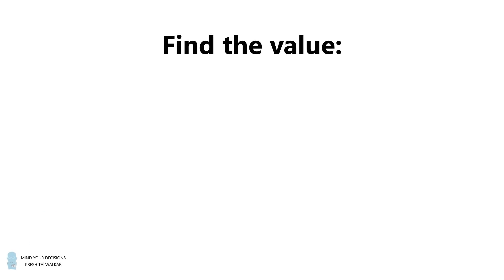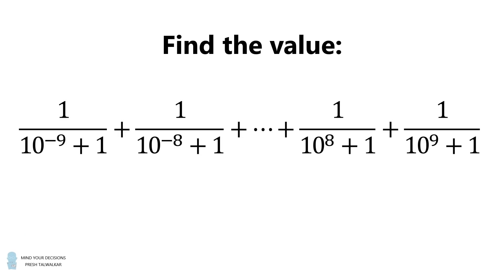Hey, this is Presh Talwalkar. Find the value of the following series. The first term is 1 divided by the quantity 10 to the power of negative 9 plus 1. The second term is 1 divided by the quantity 10 to the negative 8 plus 1. And this continues until the last two terms of 1 divided by 10 to the power of 8 plus 1, plus 1 divided by 10 to the power of 9 plus 1.